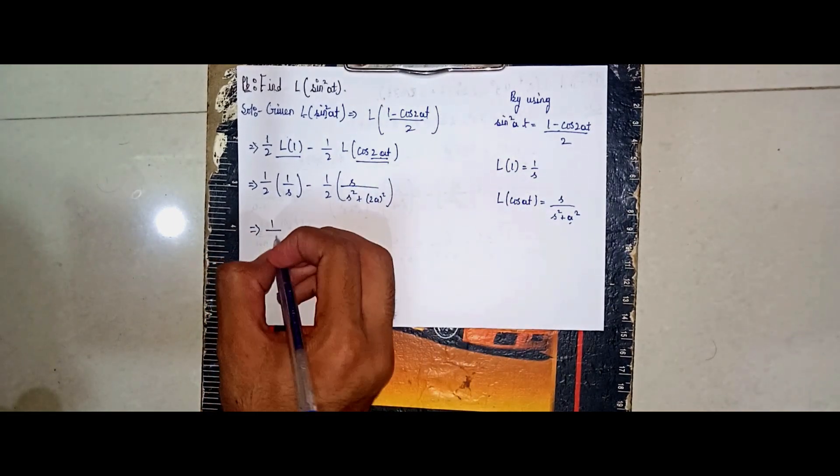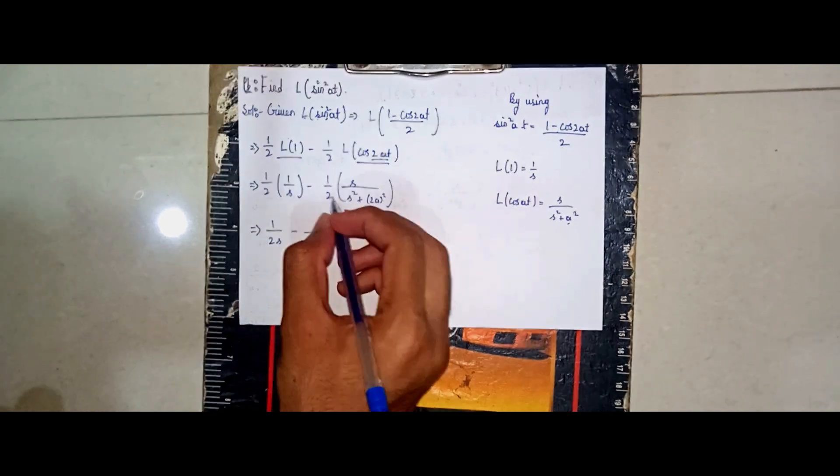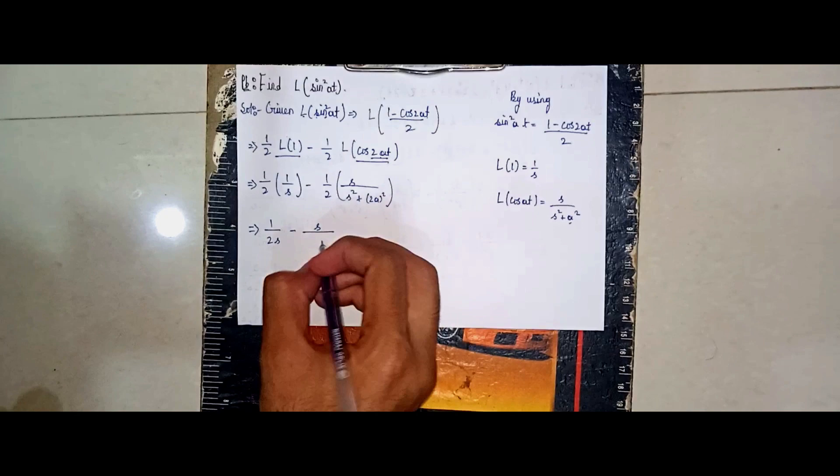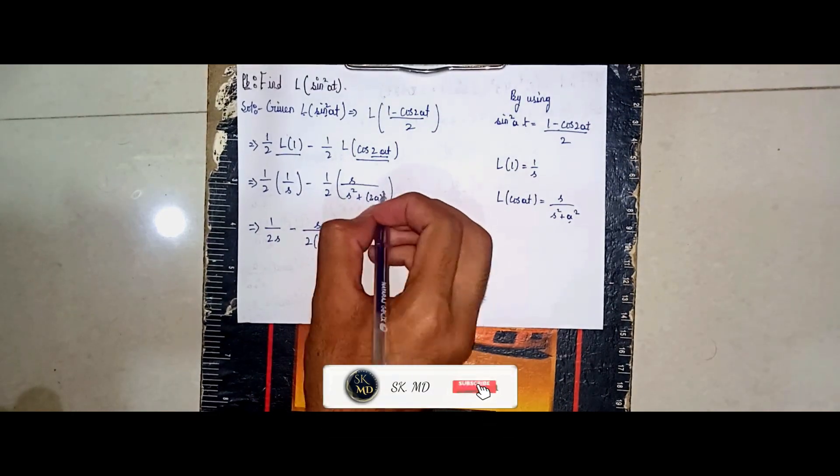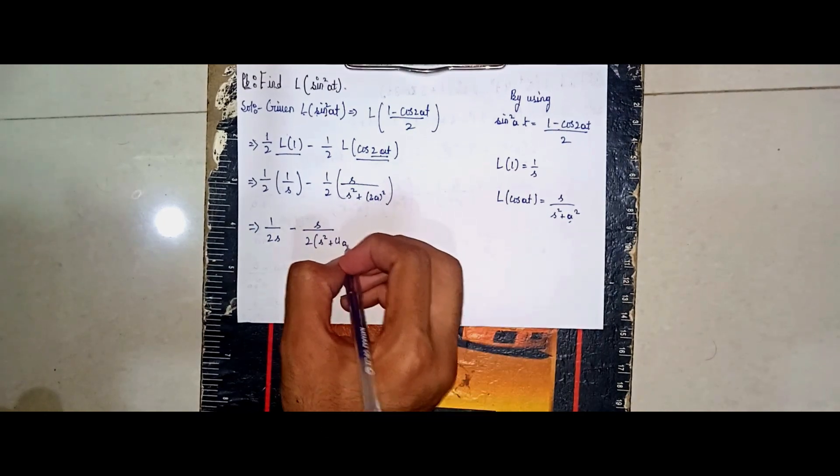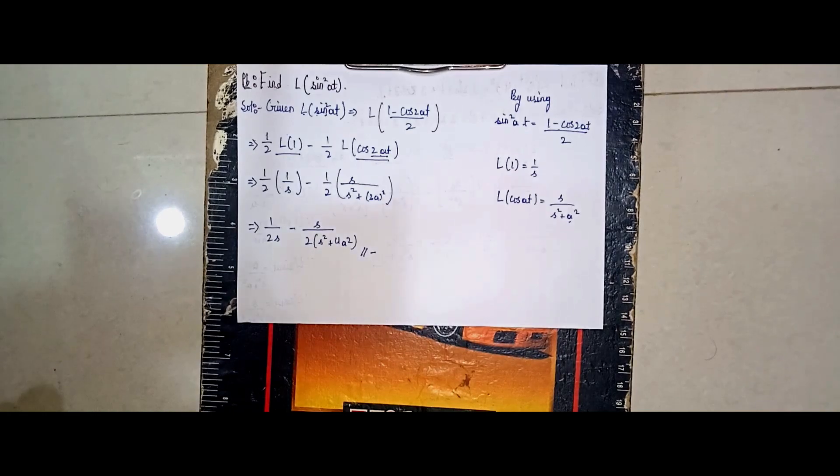It becomes 1/(2s), then minus s divided by (2 times (s squared plus 4a squared)). So this is our solution and our answer. Thanks for watching. Thank you.